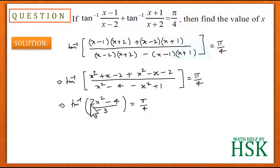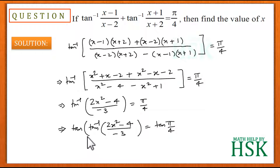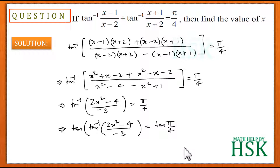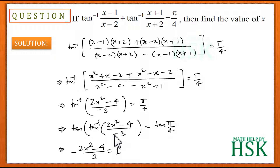In the denominator, -4+1 = -3, so we get tan⁻¹((2x²-4)/(-3)) = π/4. Taking tan of both sides, tan⁻¹ and tan cancel out, and tan(π/4) = 1, so we get (2x²-4)/(-3) = 1, with the minus sign written outside.